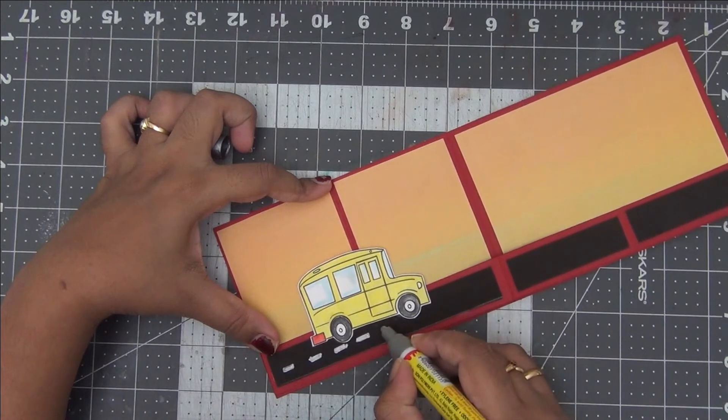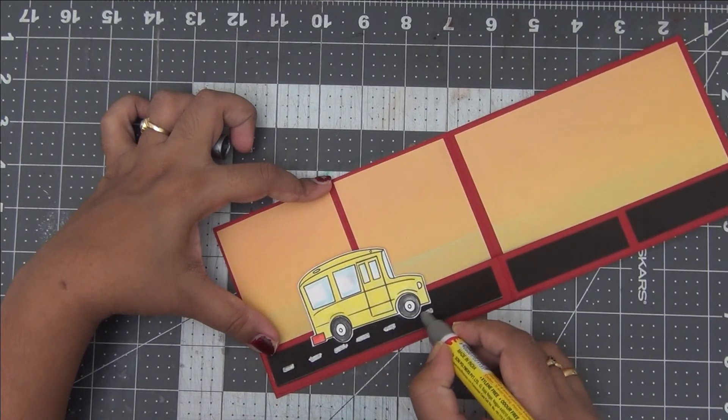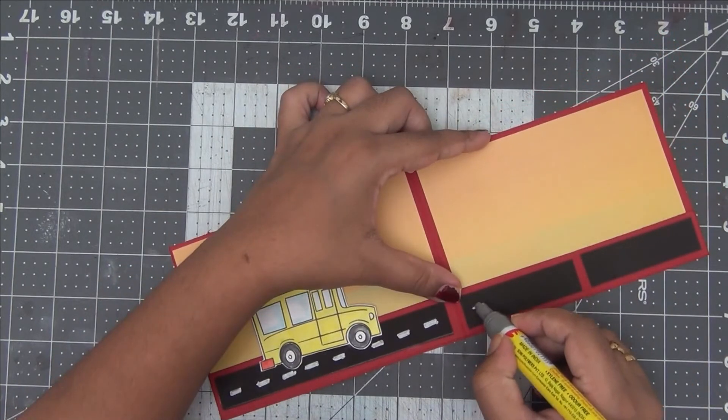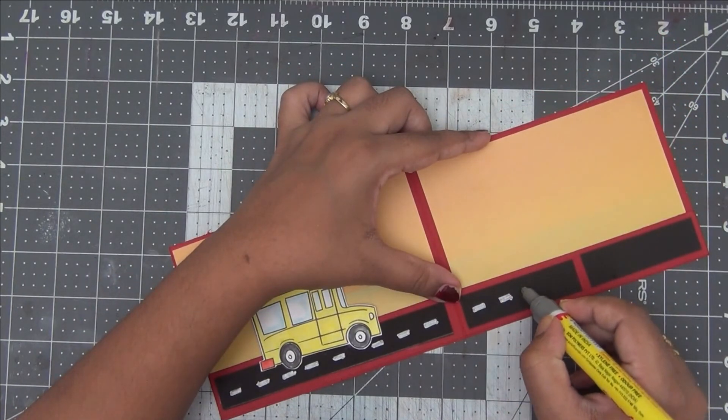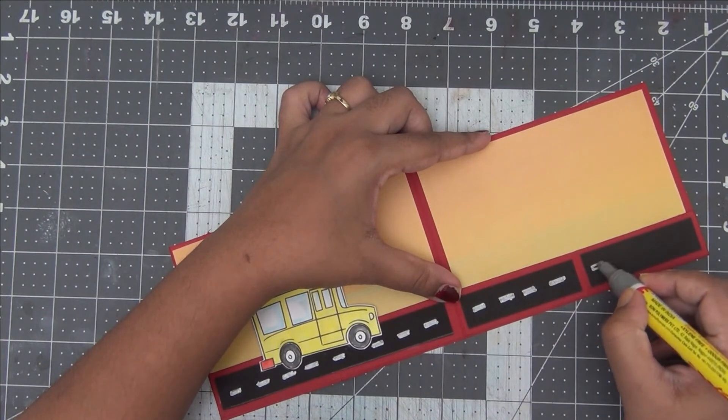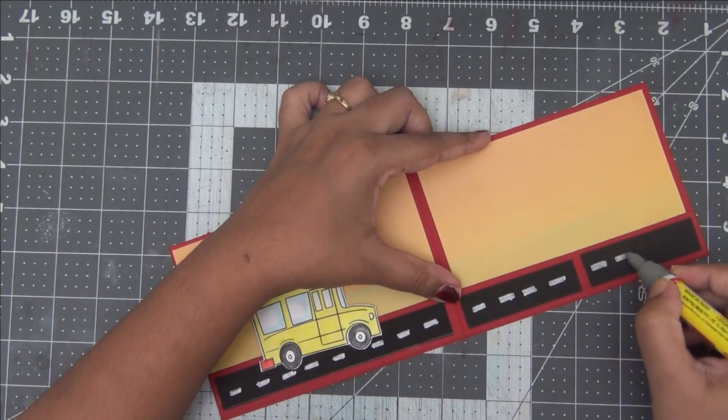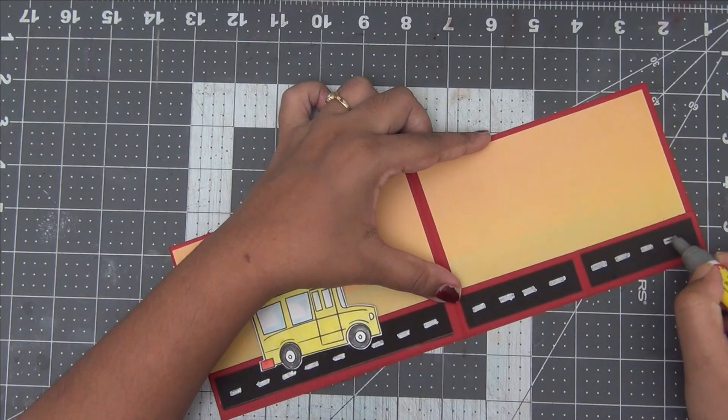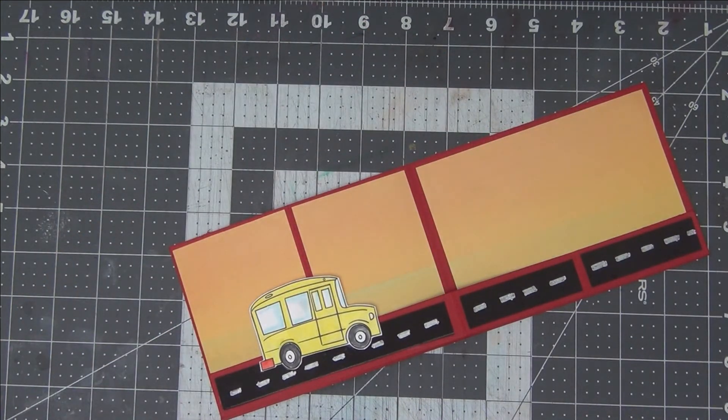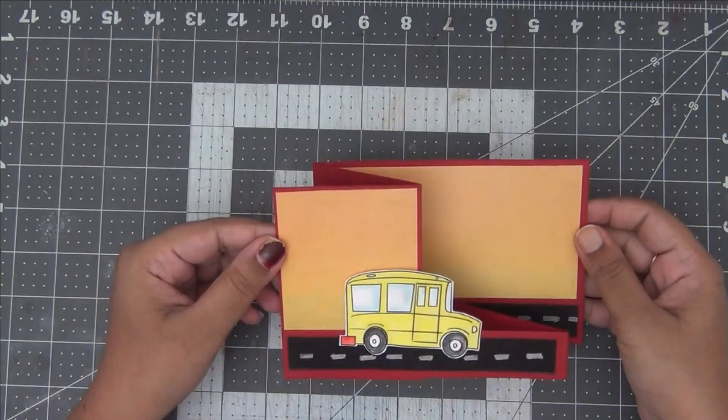To make it look like a road, I am taking a silver paint pen. You can do it with a white gel pen as well, or if you do not have a white gel pen you can just do it with white paint. I am just drawing some white dotted lines here to make it look like a road on which my school van is going. I really liked how this card is turning up.